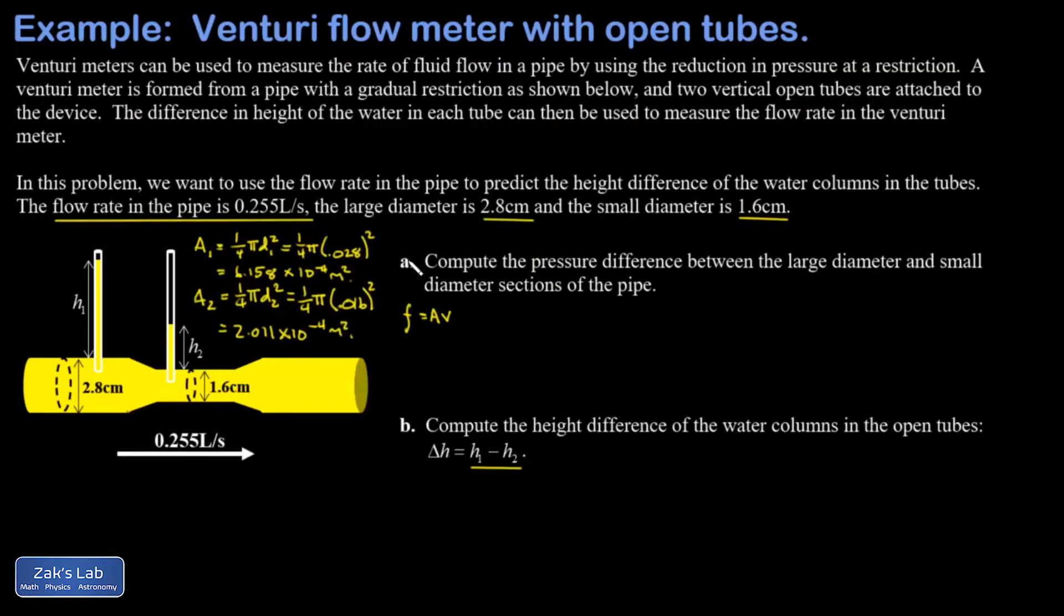The last piece of prep work is converting this flow rate into cubic meters per second. Right now it's in liters per second. There are a thousand liters in a cubic meter, so I can just tack on three zeros and call this 0.000255 cubic meters per second.